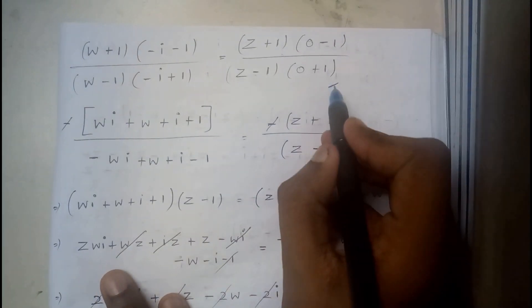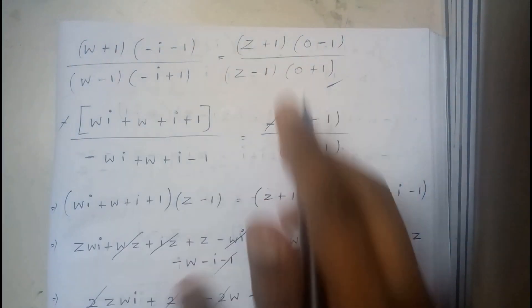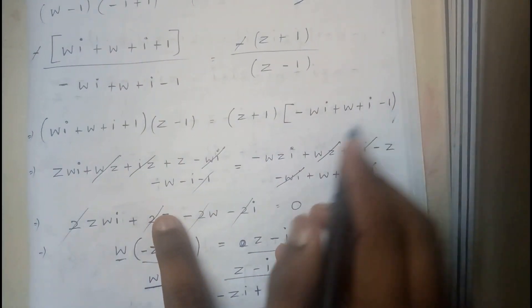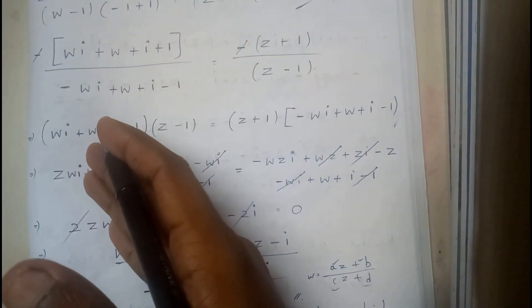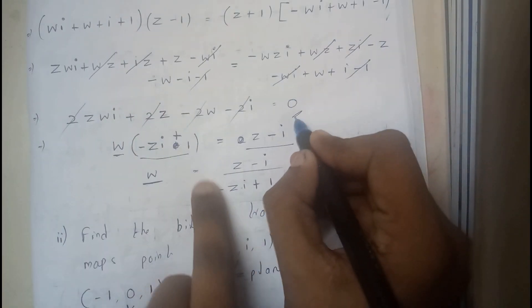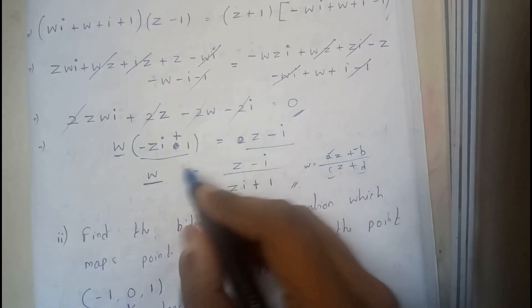So you will be getting an equation like this. You will be cross multiplying it so that it forms like this. Now you will be making all the w terms on one side and all the z terms on the other side.